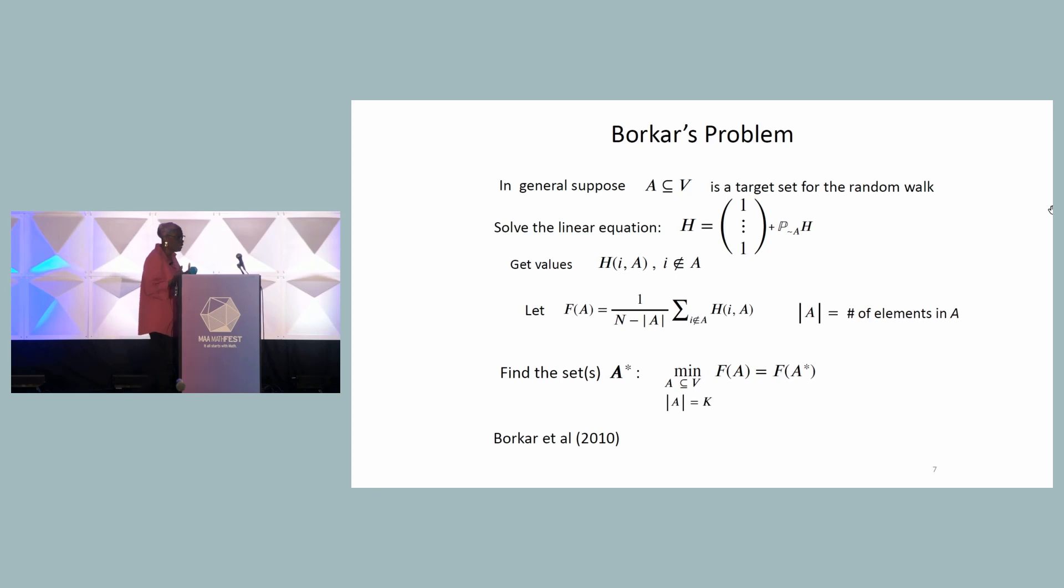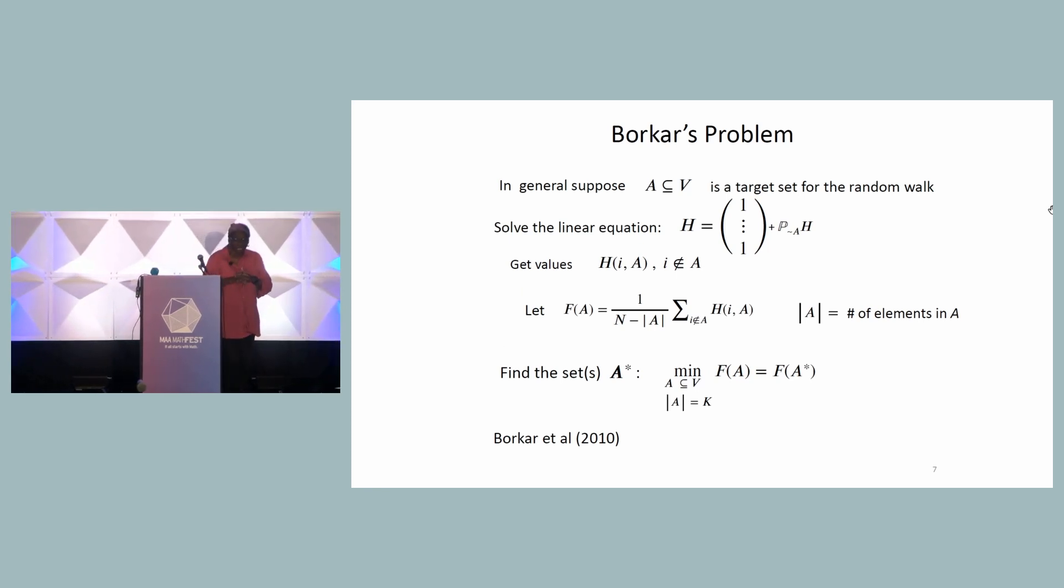That therefore is an argument for looking at the following optimization problem. Suppose now I look at all candidate target sets that have the same cardinality, then among all of them, which one has the smallest value of F? And that is, we would argue that is the most effective spreader among all sets of that cardinality. So here I've written that down where the cardinality is K. And this gives us a discrete optimization problem. And this problem was introduced by Borker and co-workers in 2010. And since I was interested in first entrance times, this looked like a very interesting problem.